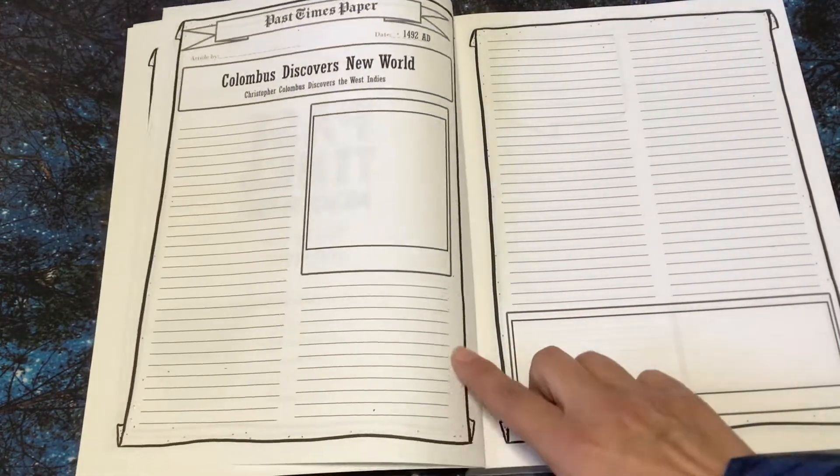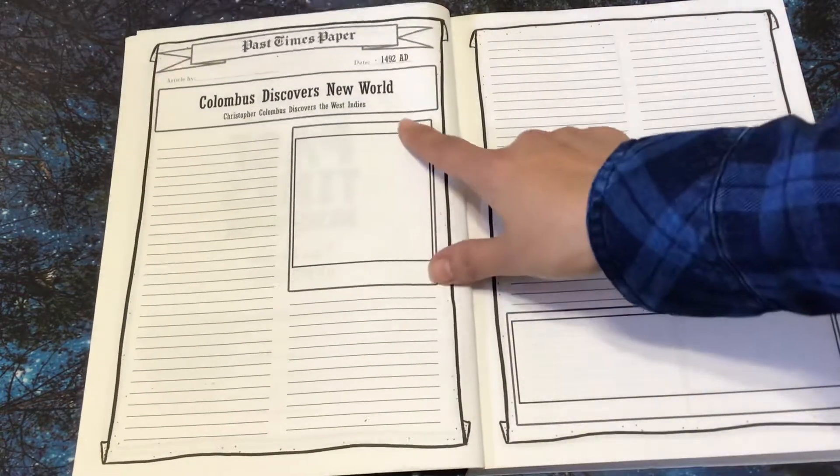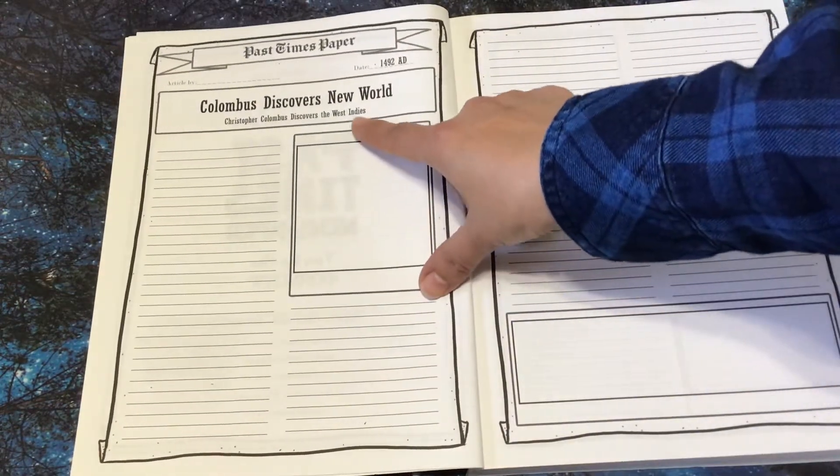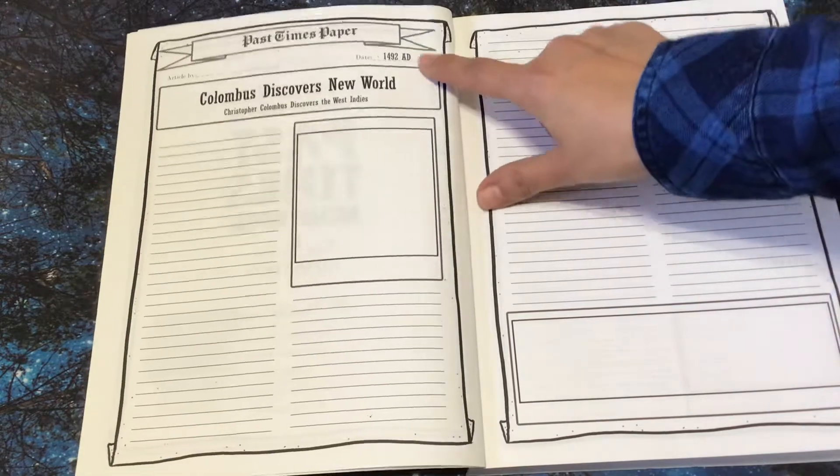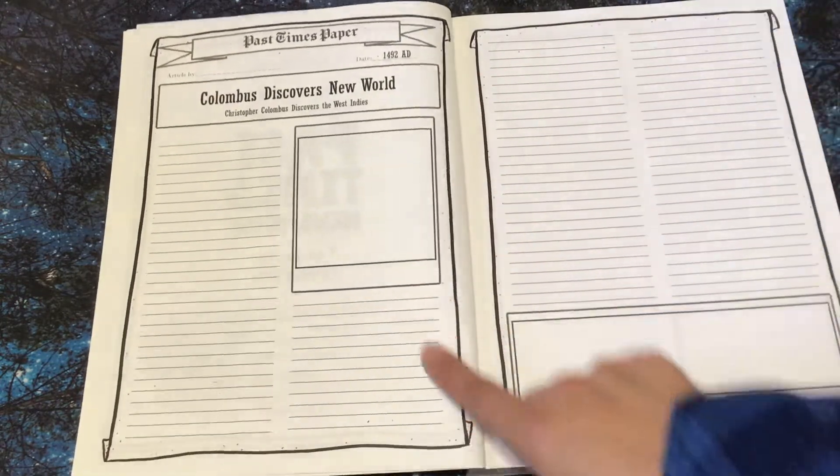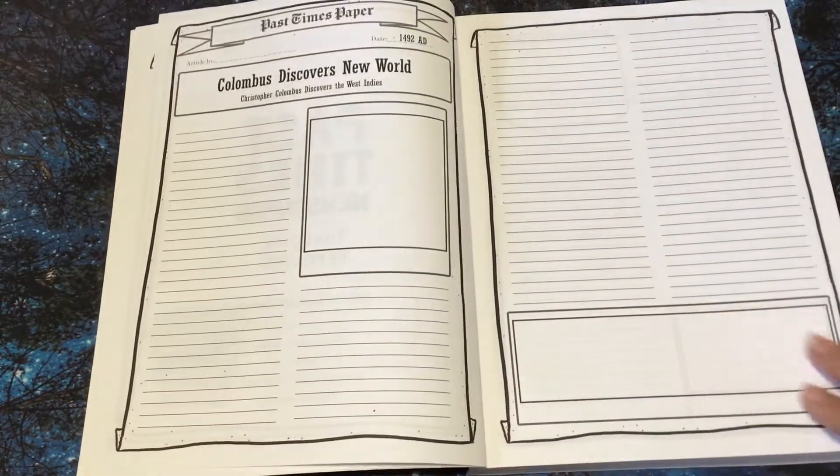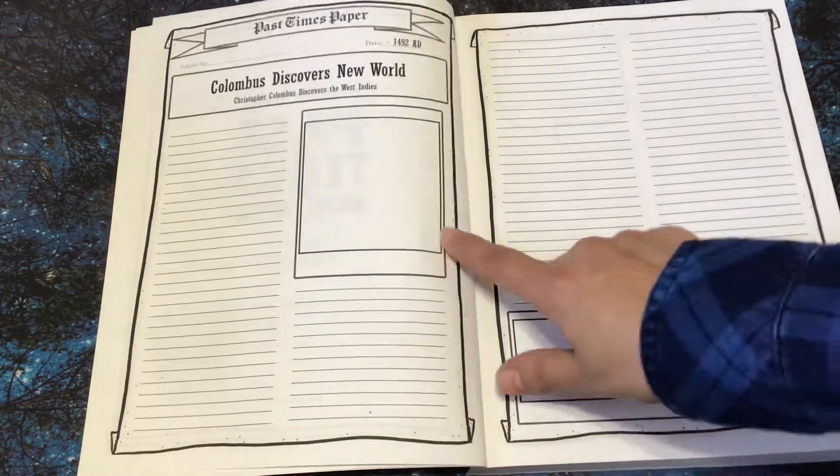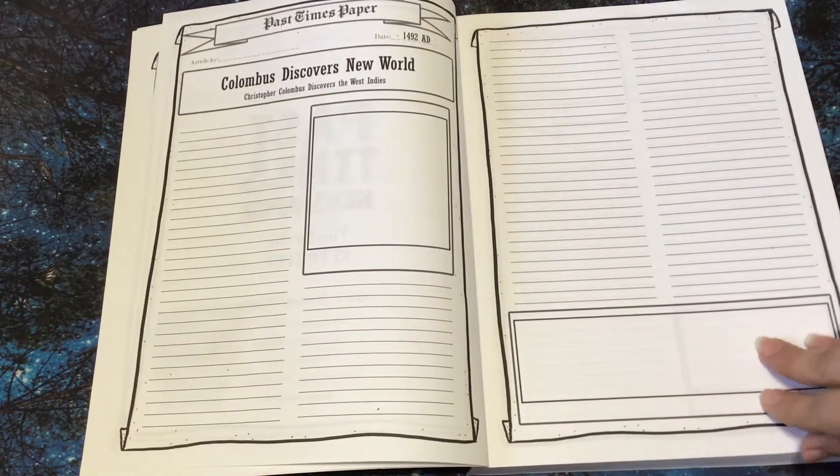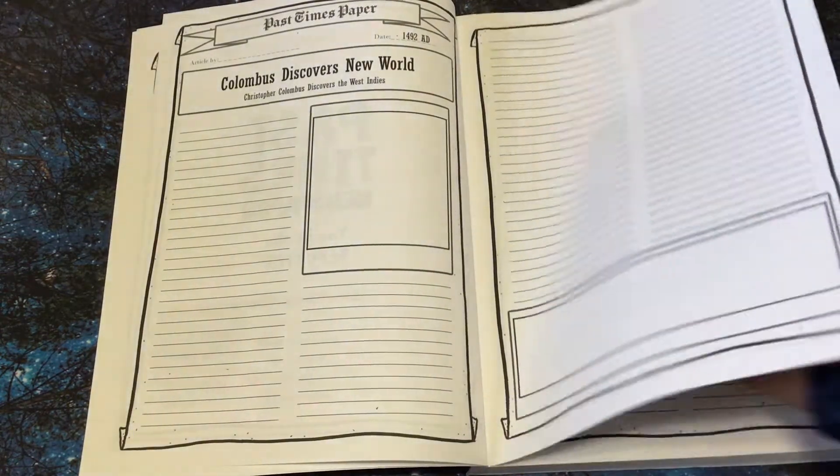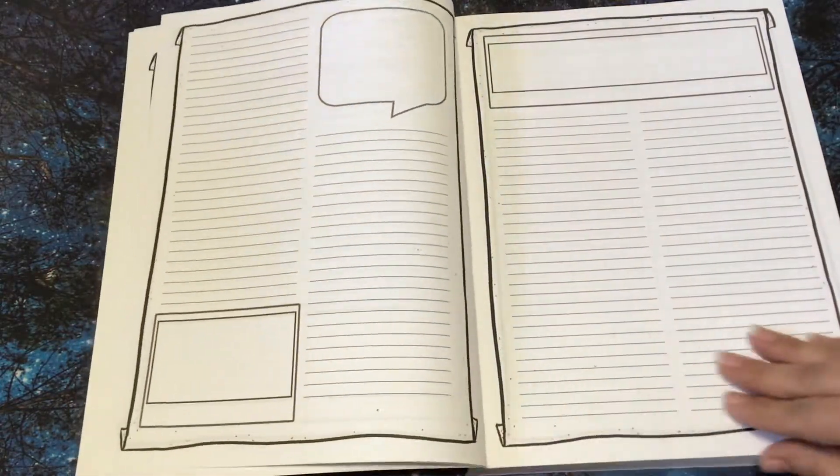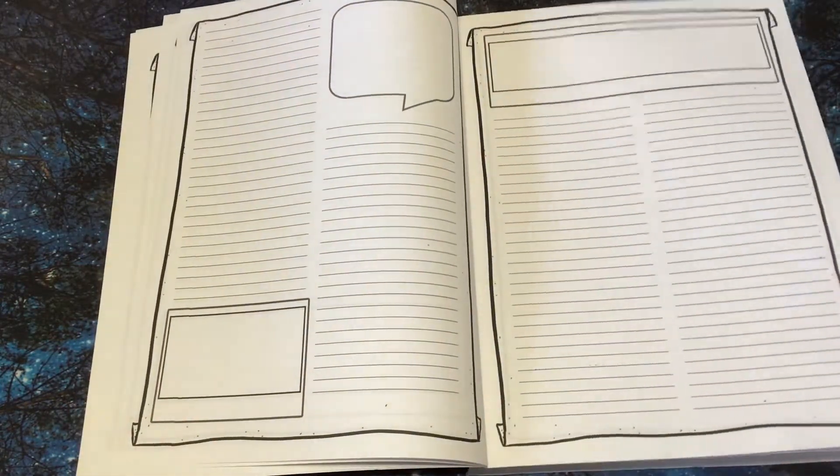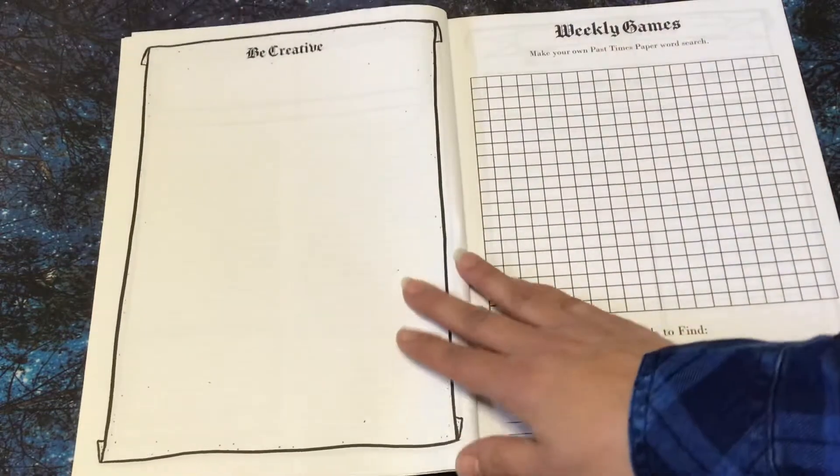So right here, Columbus discovers the New World. Christopher Columbus discovers the West Indies. And it has the date up here and where they can write and draw or illustrate or even find things to paste inside. Or I would use double tape. So it gives plenty of room for them to write their article.